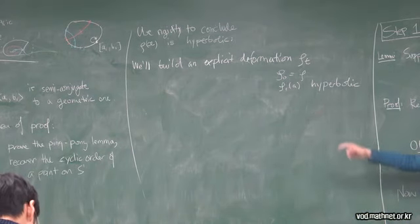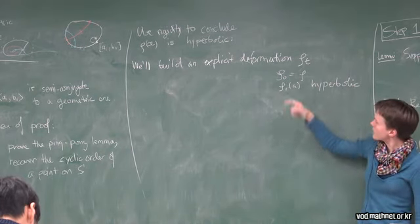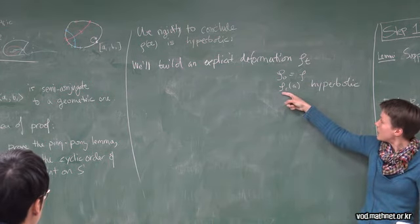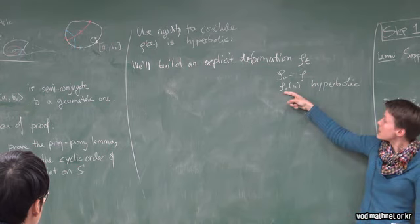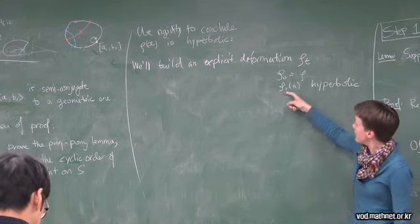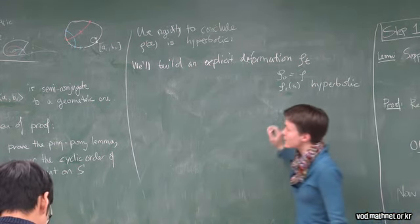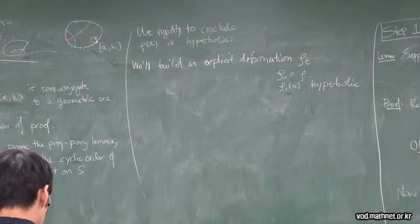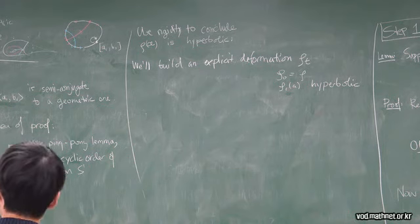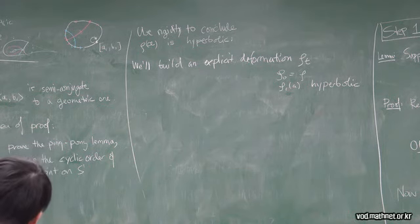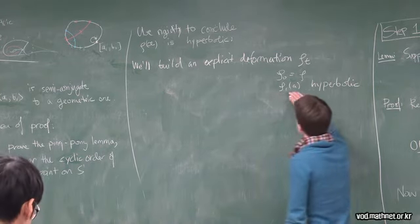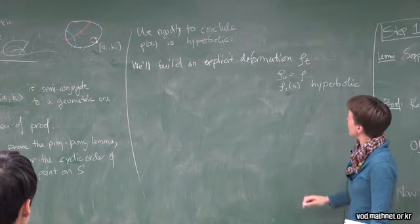Rigidity will mean that rho_1 was conjugate to rho_0, so it's semi-conjugate to rho_0. And if rho_1 of A happens to just have two fixed points, anything semi-conjugate to it has to have actually fewer fixed points. And that will be enough to let me conclude that this guy is actually conjugate to the original one.